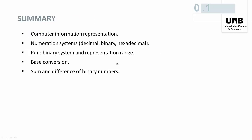Summary: we have seen that in computers, data are represented with zeros and ones. The binary numeration system has been defined, as well as the hexadecimal system. The range of representable numbers has been computed, conversion methods between numeration systems have been presented, and finally, addition and subtraction algorithms for binary numbers have been described.